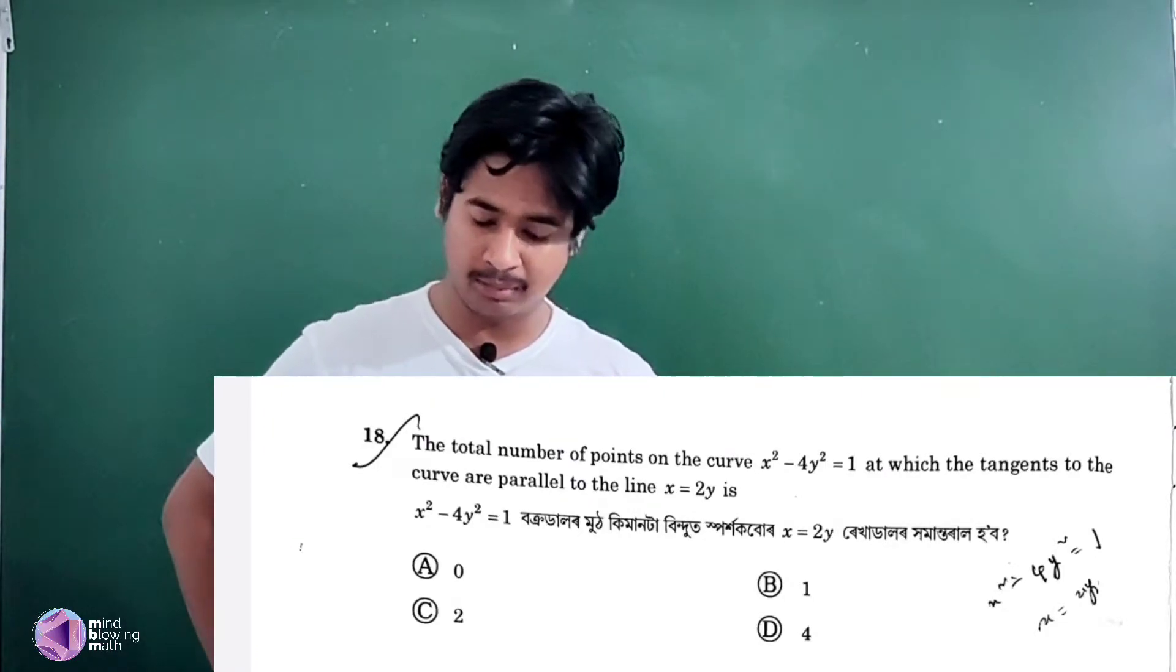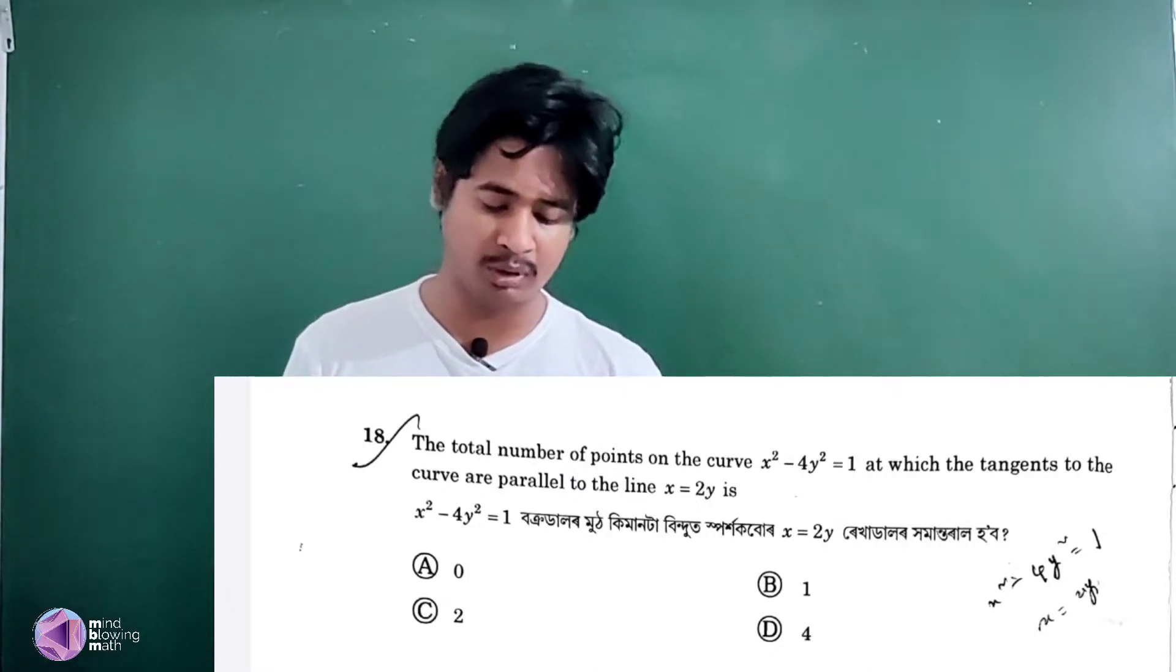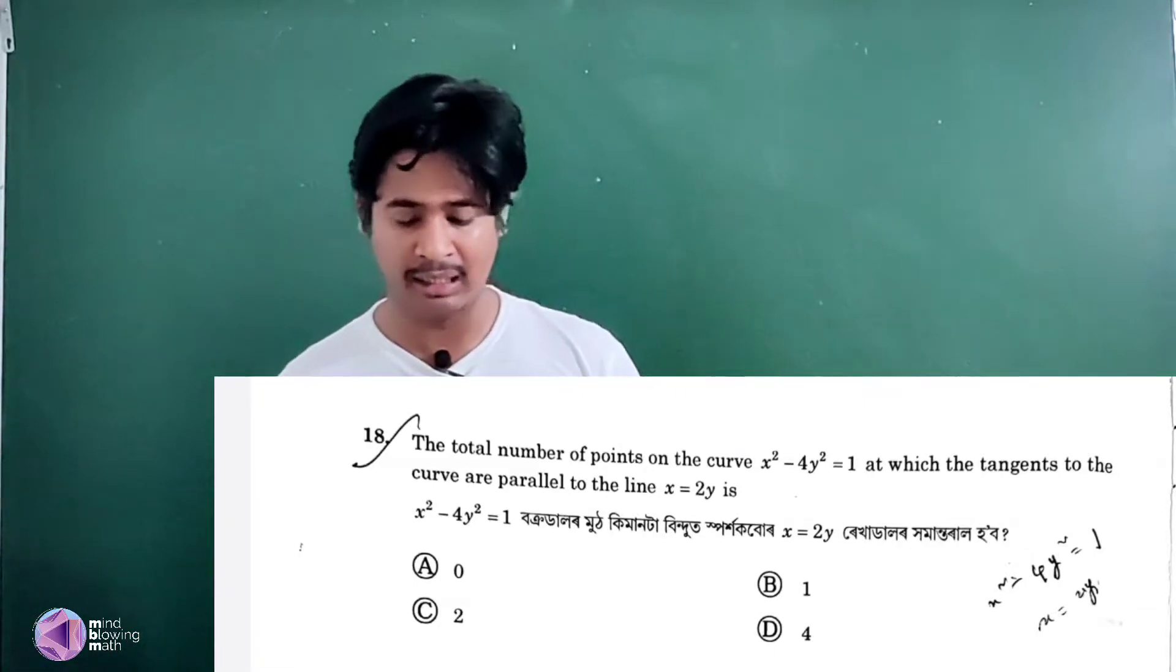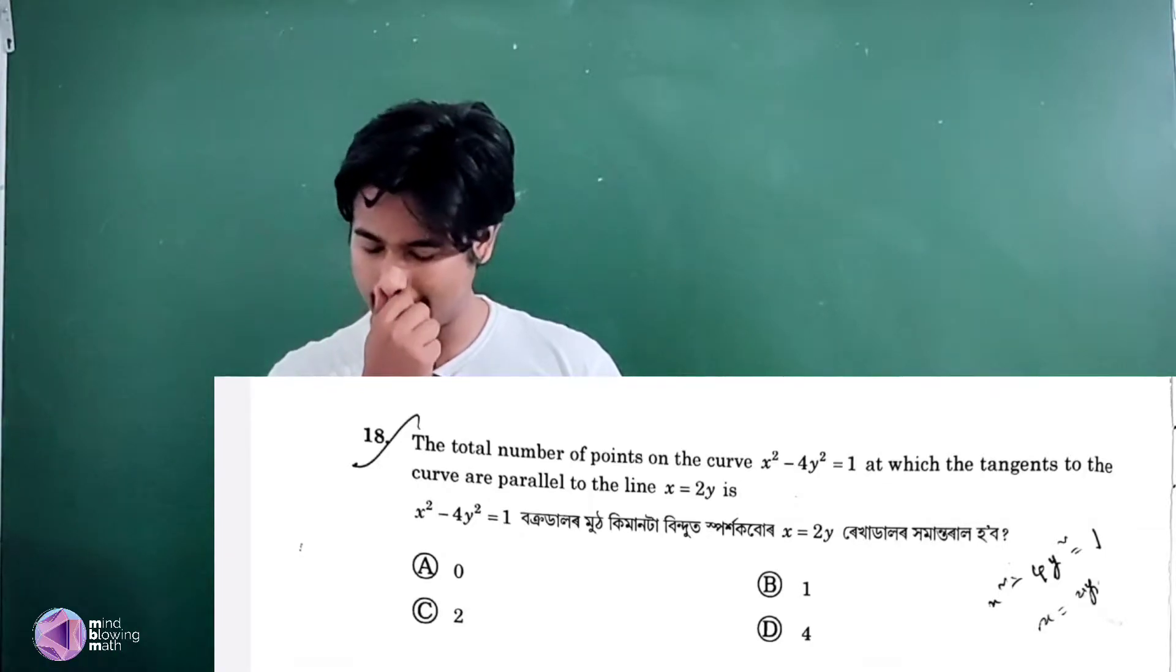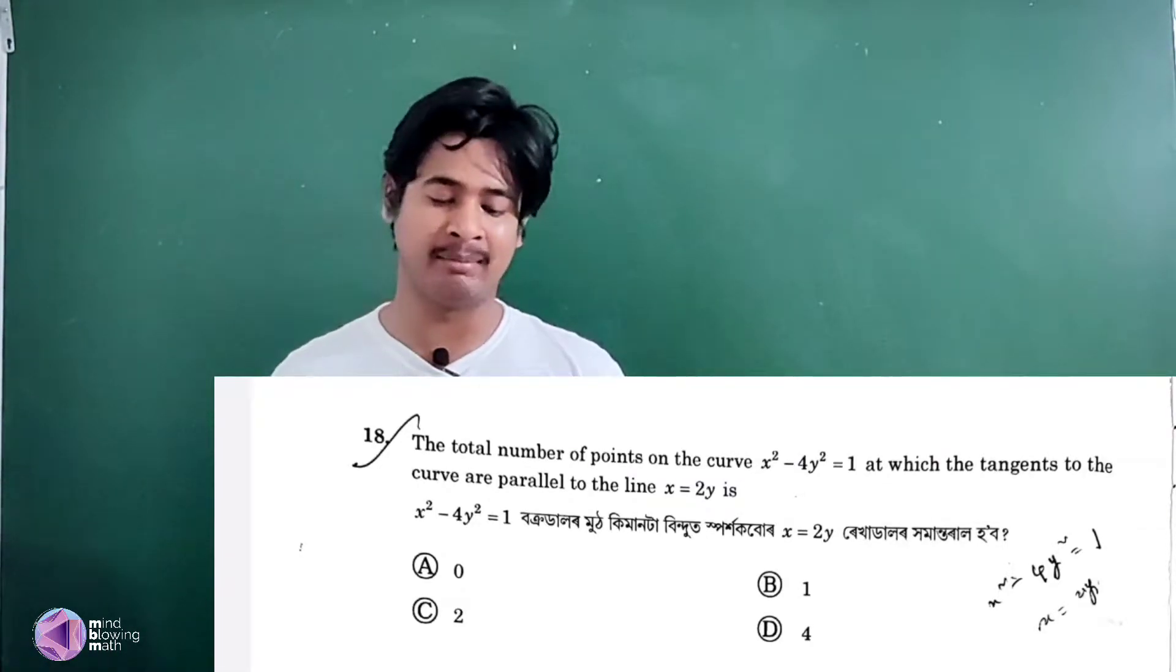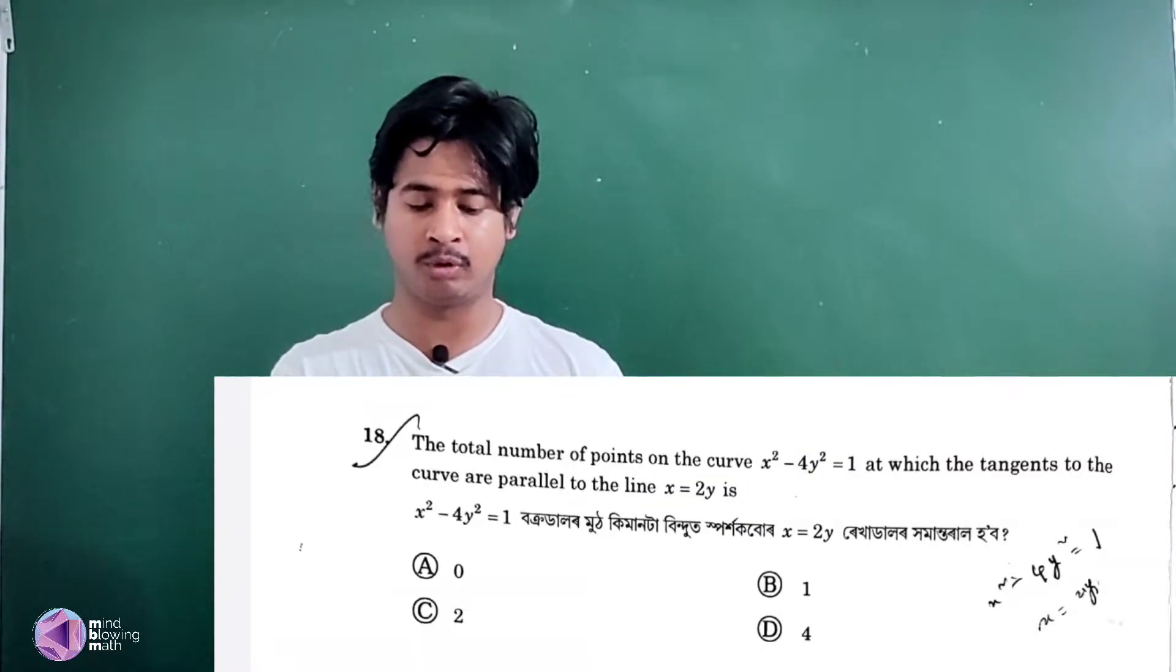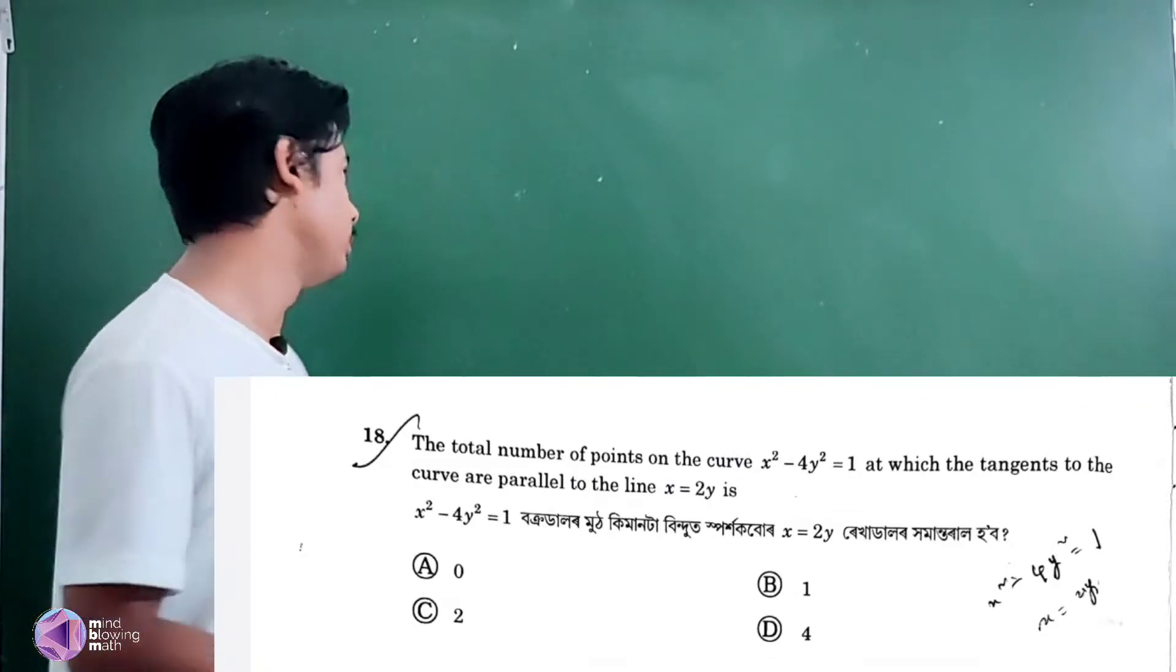The total number of points on the curve x squared minus 4y squared is equal to 1, at which the tangent to the curve are parallel to the line x equal to 2y. Total number of points.